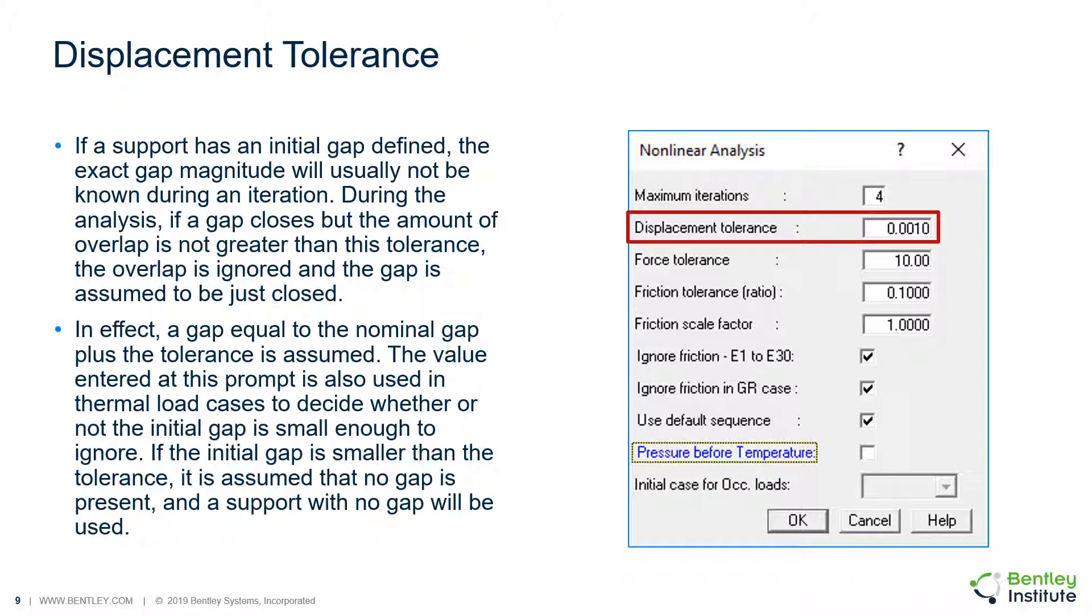The value entered at this prompt is also used in thermal load cases to decide whether or not the initial gap is small enough to ignore. If the initial gap is smaller than the tolerance, it is assumed that no gap is present and the support with no gap will be used.